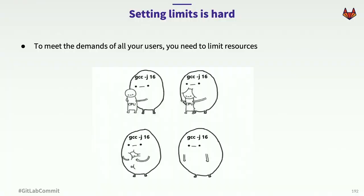Let's talk about limits. Nobody has an unlimited cloud budget. And if you're running on-prem, it's even more constrained — it takes time to buy, rack and stack, configure, and install new hardware. To meet the demands of all your users, you need to put limits in place. Otherwise one or two users can use up all your resources. While users may not like limits, it helps keep the environment healthy for everyone.